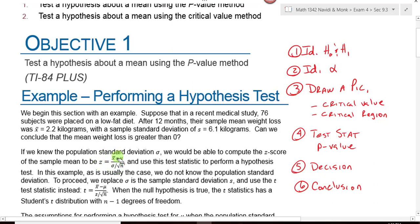When we knew the population standard deviation, we would use this to calculate our test statistic. It was a z-score. Now that's going to be a t-score instead of a z-score. So we don't know the population standard deviation. We use the sample standard deviation instead.